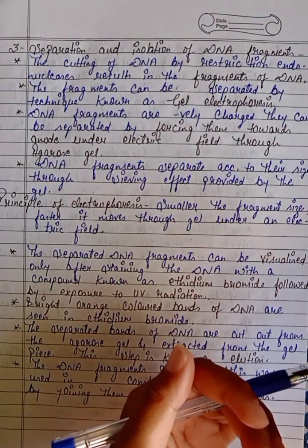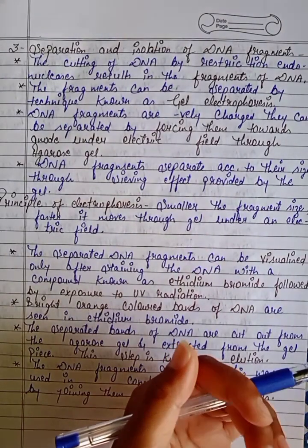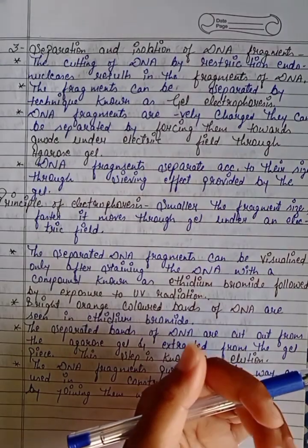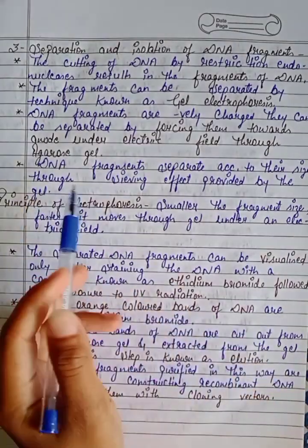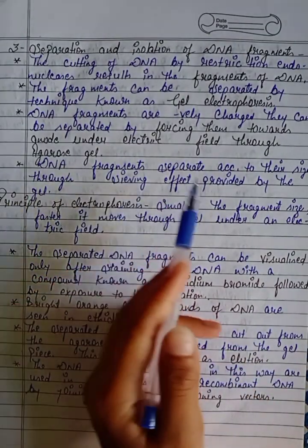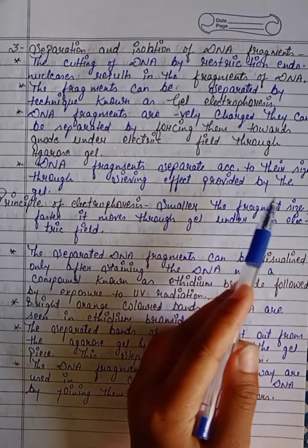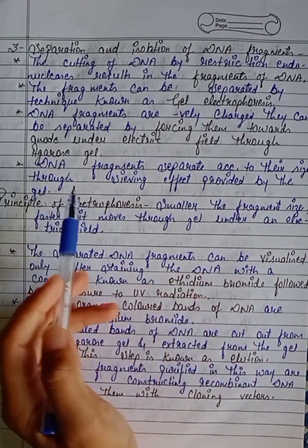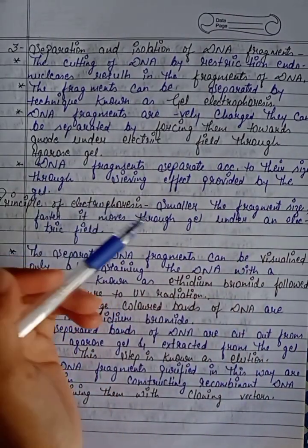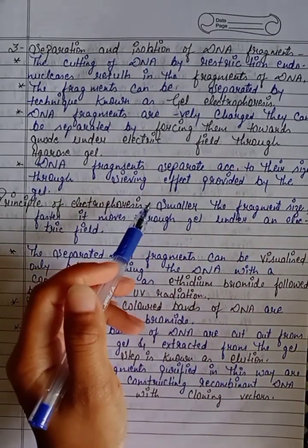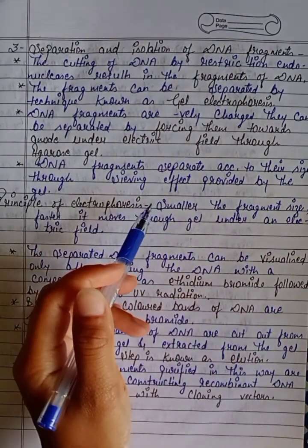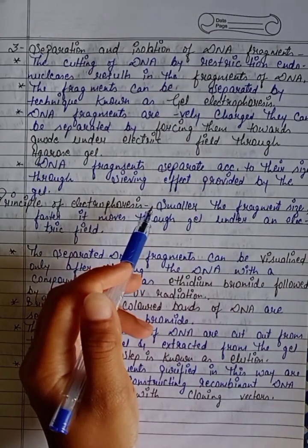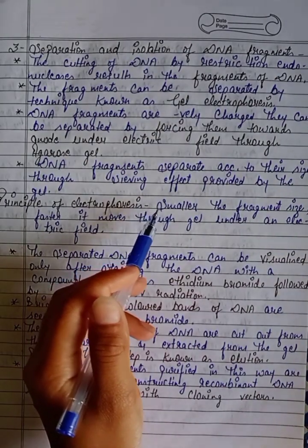What is agarose gel? Under the electric field, the negatively charged DNA moves towards the anode. DNA fragments separate according to their size through the sieving effect provided by the gel.